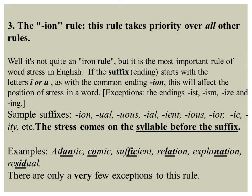Rule three is very important and we will carry this rule further in this session. The '-ion' rule — I, O, N. This rule takes priority over all other rules. It is the most important rule of word stress in English. If the suffix starts with the letters 'i' or 'u', as with the common ending '-ion', this will affect the position of stress in a word. Exceptions include the endings '-ist', '-ism', '-ize', and '-ing'.